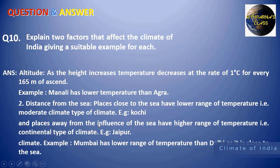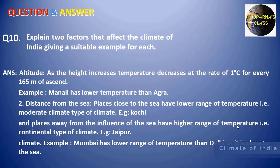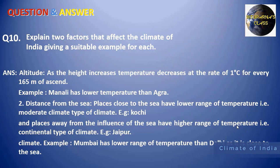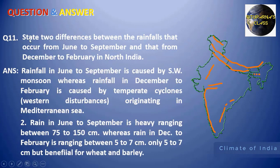Places away from the sea have a higher range of temperature. For example, in Jaipur the annual range could be 25°C — with a summer temperature of 50°C and winter temperature of 25°C. So the annual range of temperature is higher for places farther from the sea.